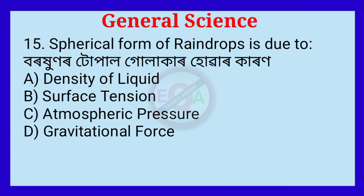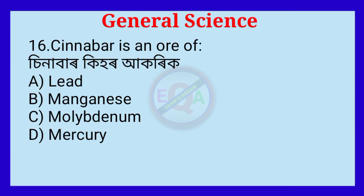Question number 15. The spherical form of rain drops is due to — correct answer: B, surface tension.